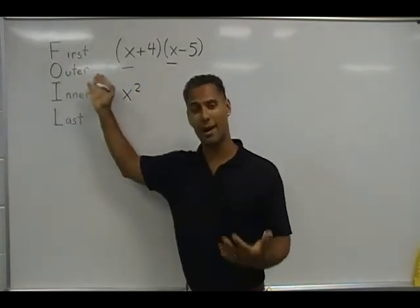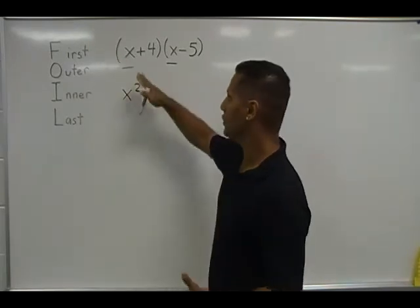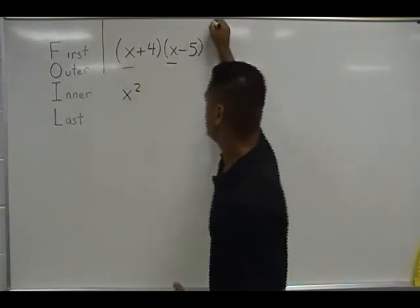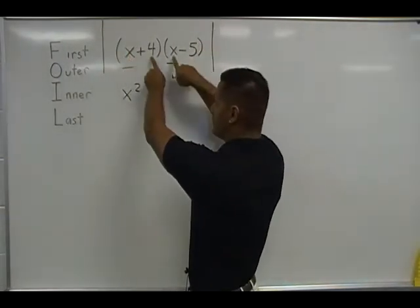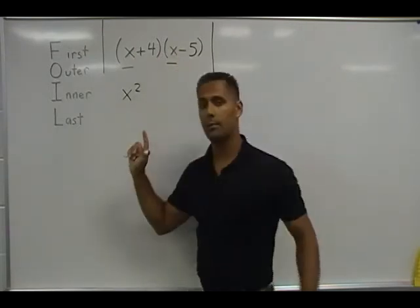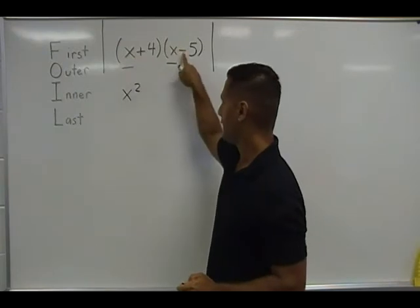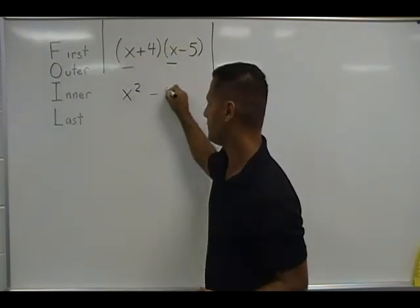Next, we move on to the O or the outer terms. Now when you think about the outer terms and the inner terms, you should look at both of these binomials as a whole. So we are going to group these together. We consider these terms the outside terms and these two terms the inner terms. So let's start by multiplying the outer terms together, which of course are x and negative 5. Negative 5 times x is negative 5x.